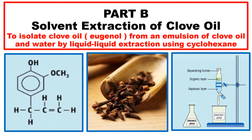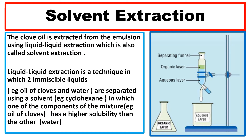Part B is called solvent extraction of clove oil. We want to isolate clove oil (eugenol) from an emulsion of clove oil and water by liquid-liquid extraction using cyclohexane. This technique separates two immiscible liquids — clove oil and water — using cyclohexane, in which one component has a higher solubility than the other.